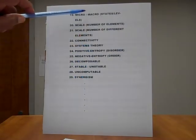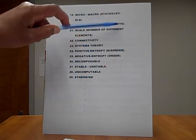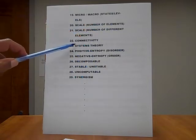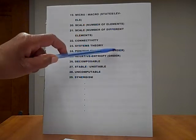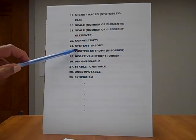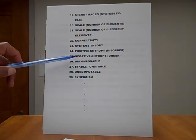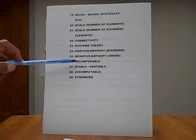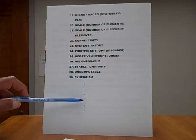Now, nineteen is micro, macro, states and levels of. Twenty, scale, number of elements. Number twenty-one, scale, number of different elements. Twenty-two, connectivity, systems theory, positive entropy, which is disorder. Negative entropy, which is order. You have to have both. That's why the universe is as it is. And what you find written in a physics book is only part of the story. Number twenty-six, decomposable, stable, unstable, uncomputable, synergism, and so on.